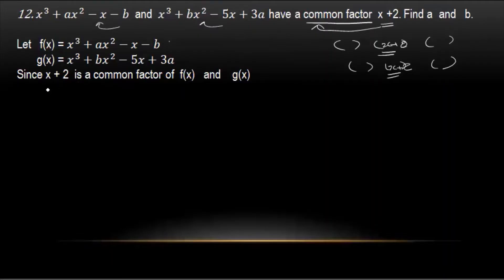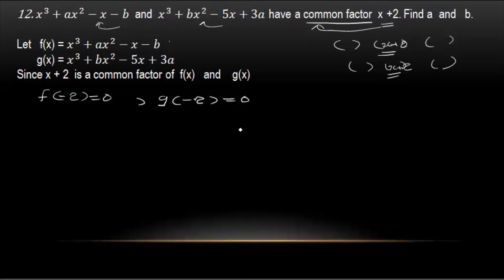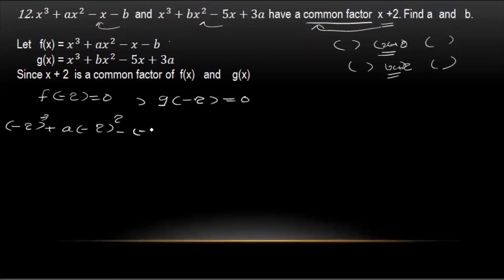x plus 2 is a factor of f of x. So f of minus 2 equals 0. And x plus 2 is a factor of g of x, so g of minus 2 equals 0. Substituting minus 2: minus 2 whole squared plus a times minus 2 whole squared minus minus 2 minus b equals 0.